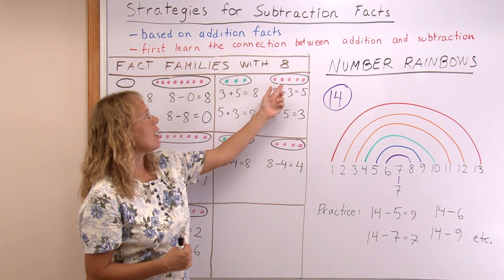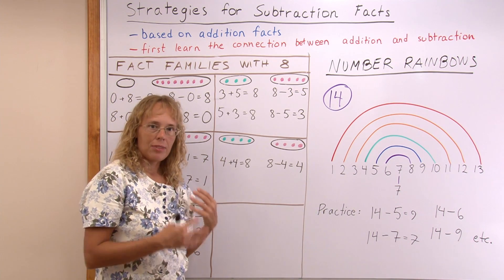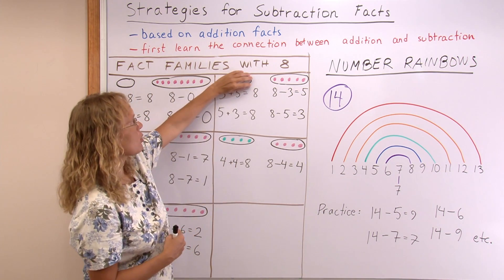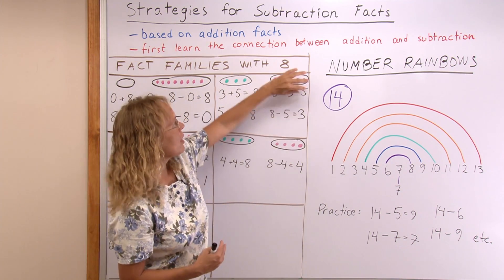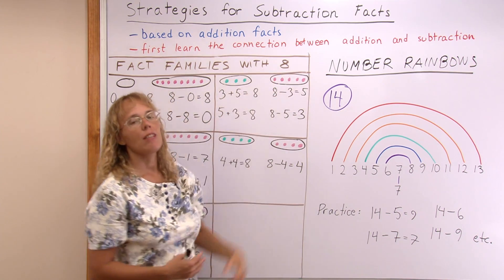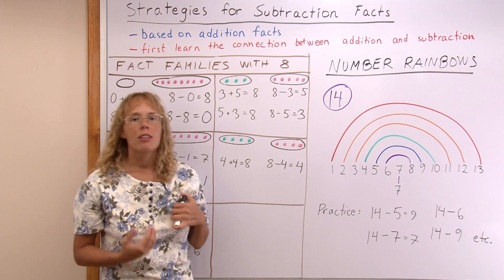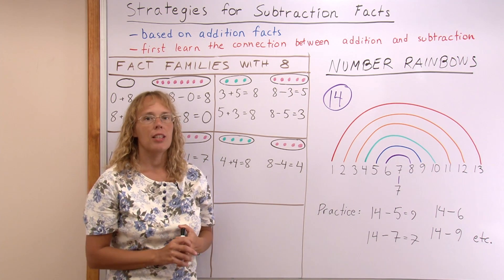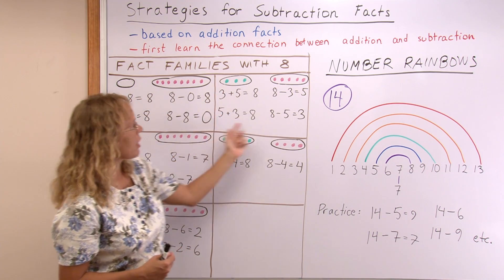So there's 3 and 5, and to write a subtraction you start with the total 8. 8 and take away this group leaves 5, or 8 take away the 5 leaves 3. And then when they have learned to write these kind of additions and subtractions from the same picture, then that is the fact family here.